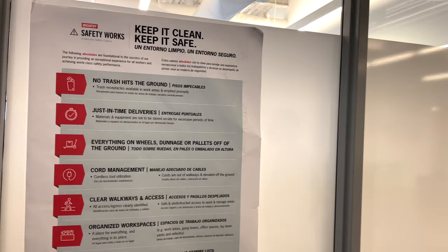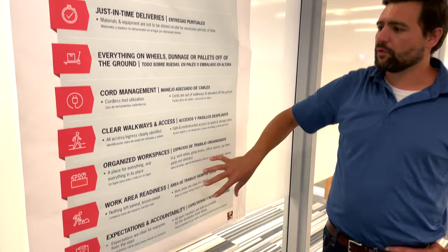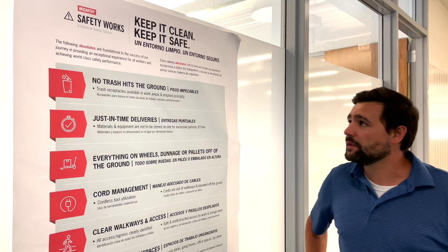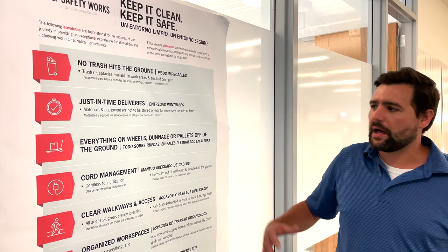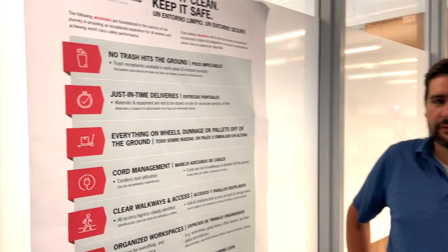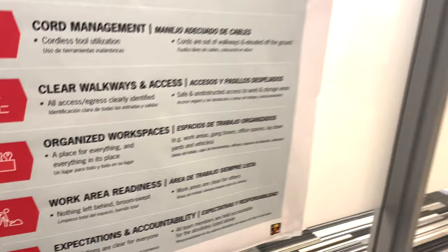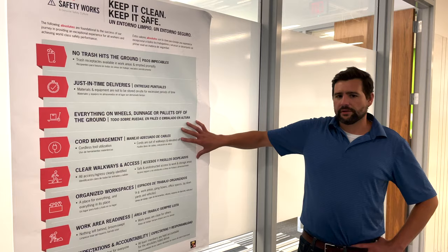A lot of people have seen this graphic — can you explain the impact it's had and how you use it? You may have seen this described in the lean community as 5S, but our organization's safety group translated it to Keep It Safe, Keep It Clean — our Keep It Safe initiative. It takes the 5S focuses and translates them to be more safety-focused, and that's what we push and implement on our jobs to keep them safer.